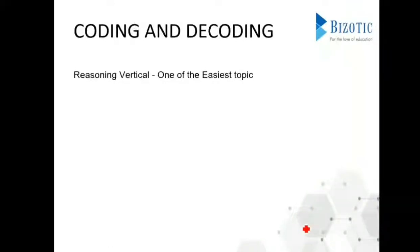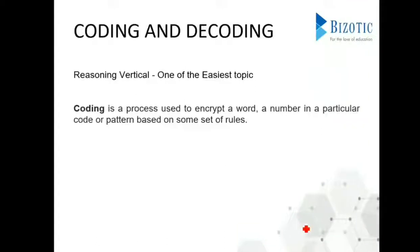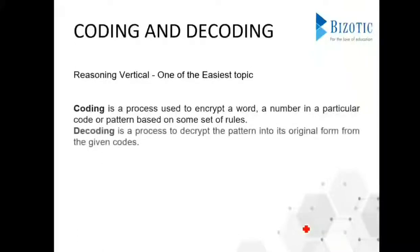Let's look into the definition. Coding is a process used to encrypt a word or a number in a particular code or pattern based on some specific rules. In decoding, we decrypt the pattern into its original form from the given set of codes.